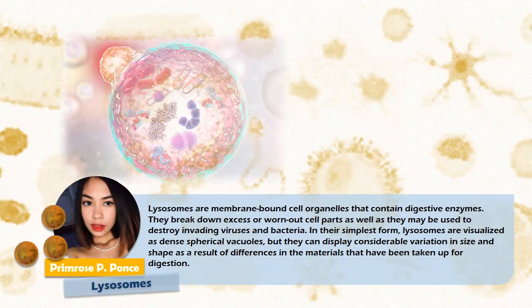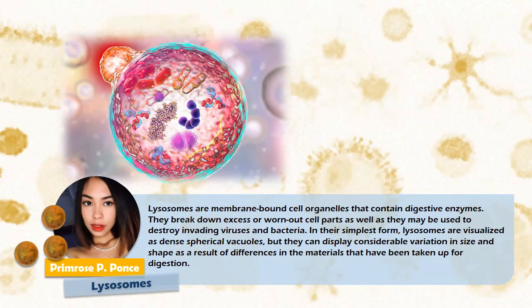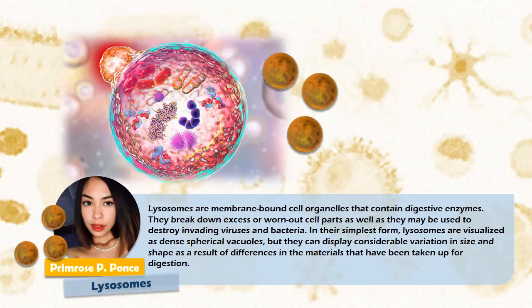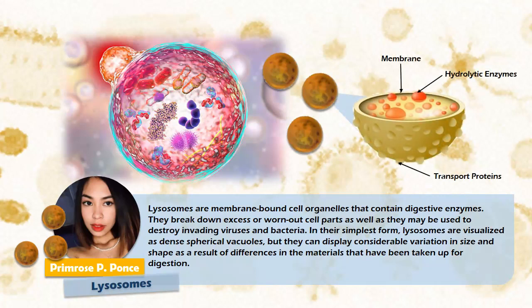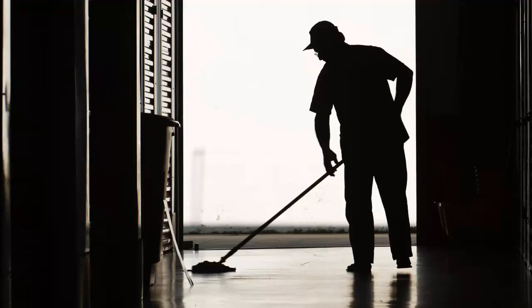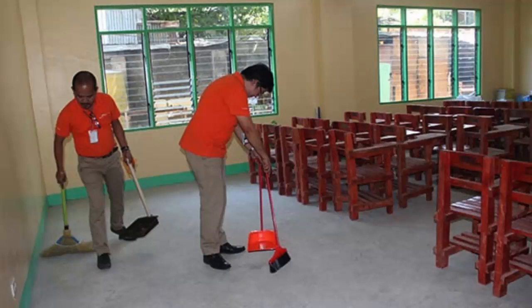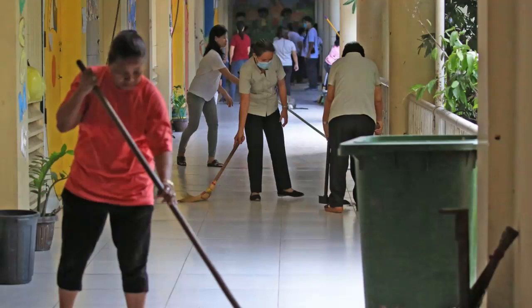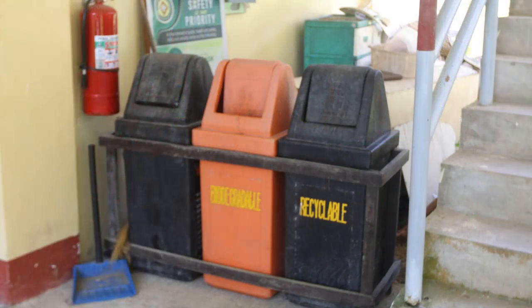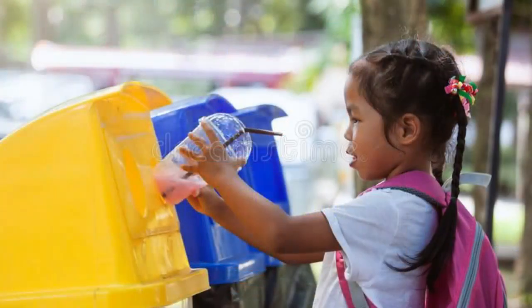Lysosomes. Lysosomes are membrane-bound cell organelles that contain digestive enzymes. They break down excess or worn-out cell parts, and may also be used to destroy invading cells and bacteria. In their simplest form, lysosomes are visualized as dense spherical vacuoles, but they can display considerable variation in size and shape as a result of different materials taken up for digestion. Lysosomes can be compared to our school janitors — like them, lysosomes clean up carbohydrates and proteins, removing waste materials just as a lysosome would inside the cell. The digestion of lipids also happens in the lysosomes, just as we dispose of our bottles and trash, which will later be recycled for further use.